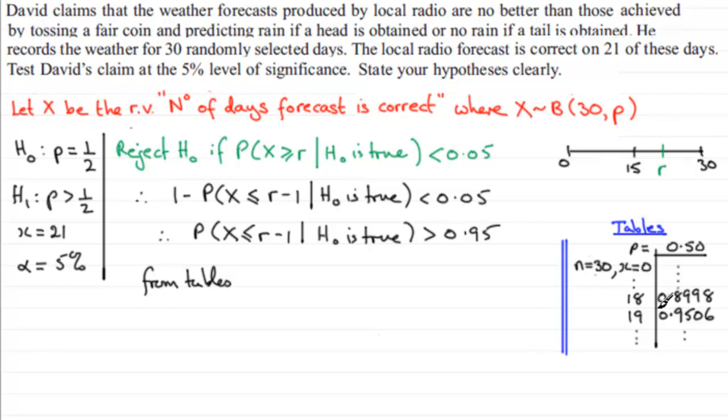So that's the value that R minus 1 would have to be. From tables we've got that R minus 1 has to equal 19.